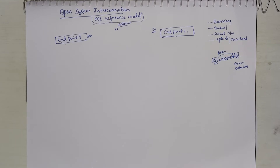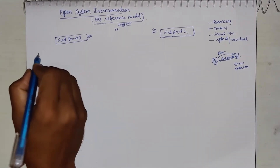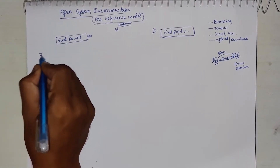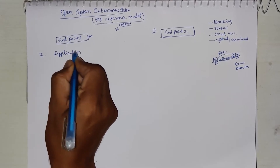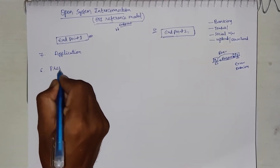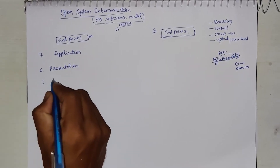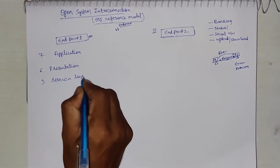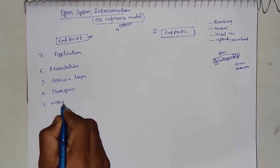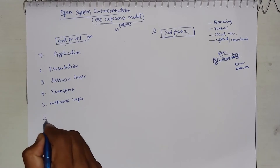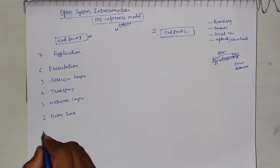For that purpose, Open System Interconnection has a layered architecture where every layer is given specific functionalities and protocols. There are 7 layers: Layer 7 is the application layer, Layer 6 is the presentation layer, Layer 5 is the session layer, Layer 4 is the transport layer, Layer 3 is the network layer, Layer 2 is the data link layer, and Layer 1 is the physical layer.